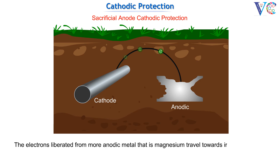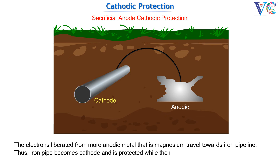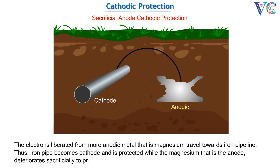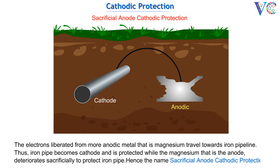The electrons liberated from the more anodic metal, that is magnesium, travel towards the iron pipeline. Thus, the iron pipe becomes the cathode and is protected, while the magnesium — that is, the anode — deteriorates sacrificially to protect the iron pipe. Hence the name Sacrificial Anode Cathodic Protection.